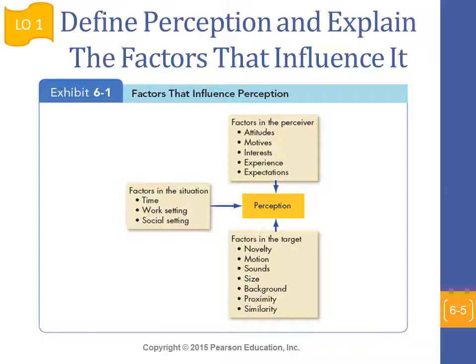Exhibit 6.1 shows the different factors that influence perception. At the top are factors we bring with ourselves: attitudes, motives, interest, experience, and expectations. There are also situational factors — the time, work setting, and social setting — and factors related to the target itself, such as novelty, motion, sound, size, or background. All together, these influence how we develop our perception.